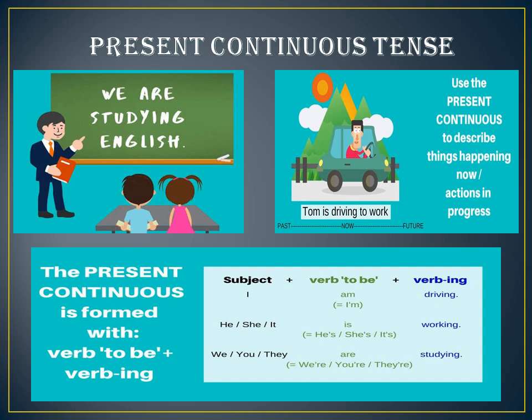Moving towards the present continuous tense — whatever we are doing right now falls into this tense. The work which is continuing in the present time is known as the present continuous tense. There are three helping verbs: 'is,' 'am,' and 'are.' With 'I' we use 'am'; with 'he,' 'she,' 'it' we use 'is'; and with 'we,' 'you,' 'they' we use 'are.'